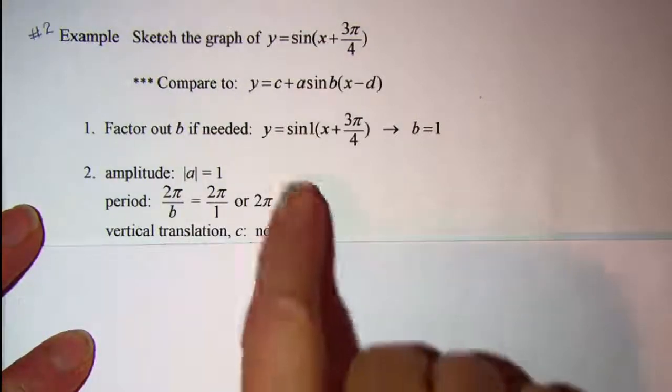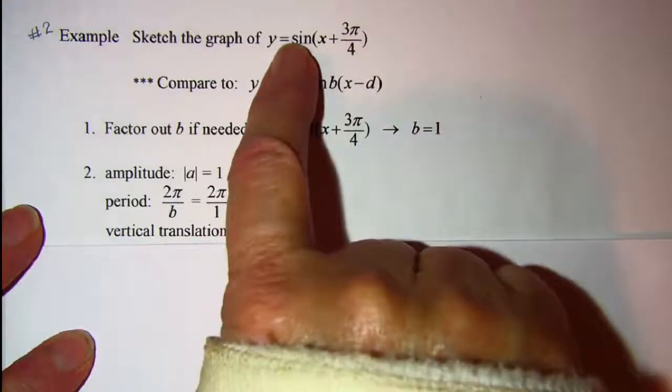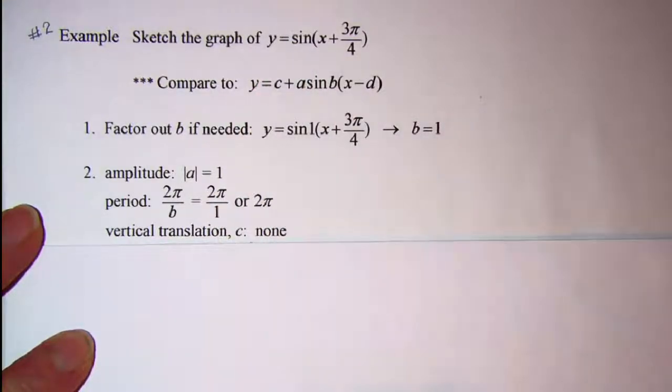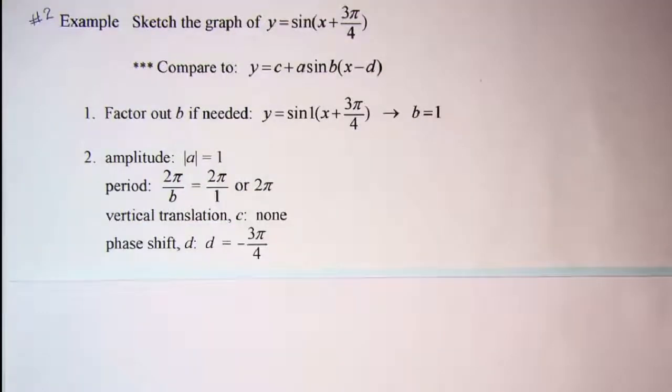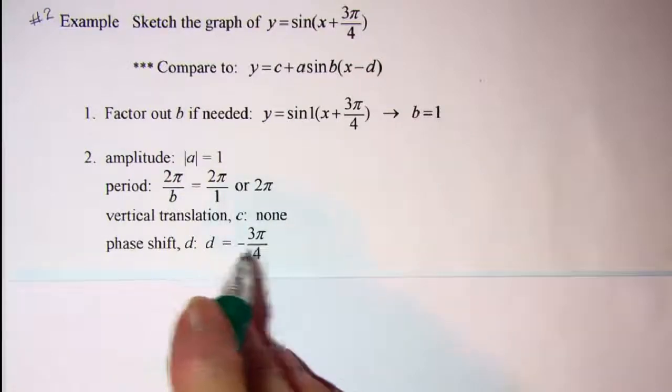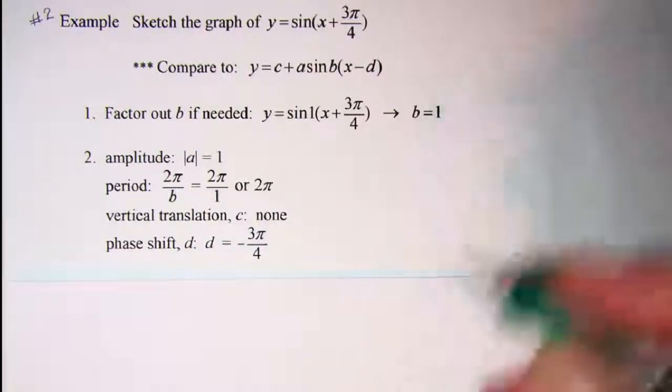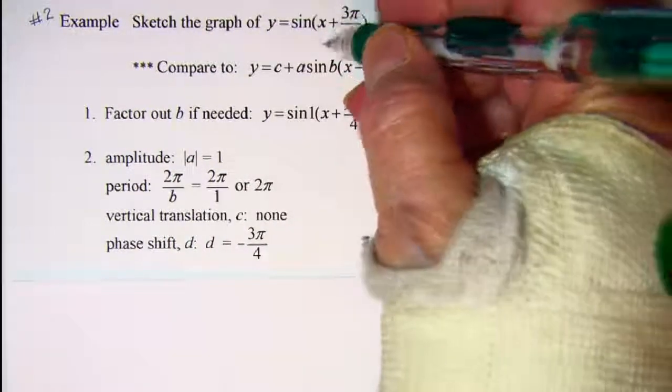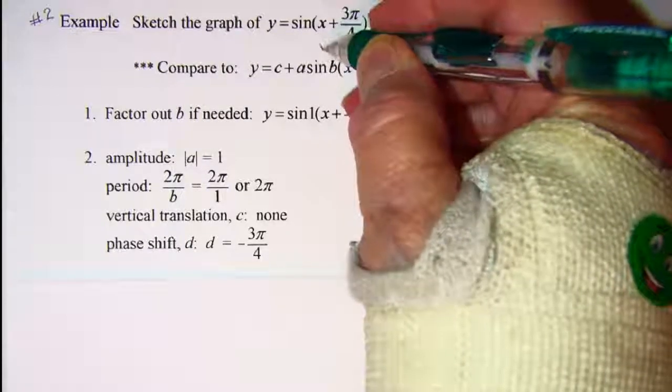We did not have a c value, so we have no vertical translation, and our phase shift is a negative 3 pi over 4.